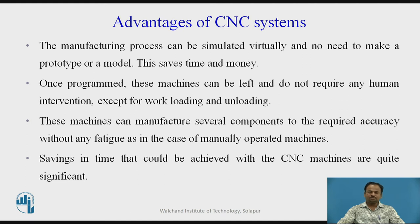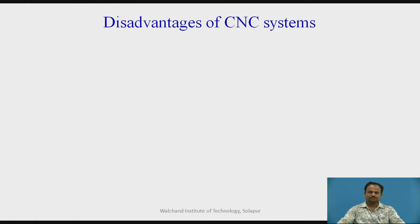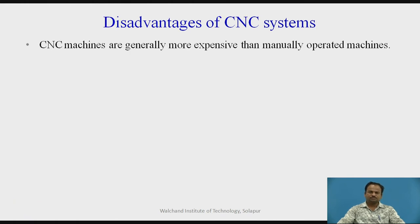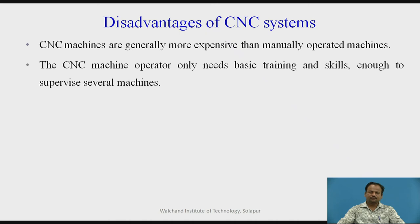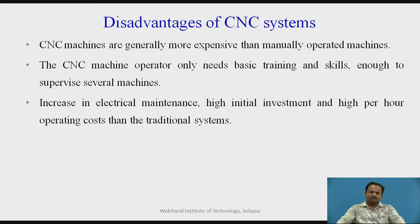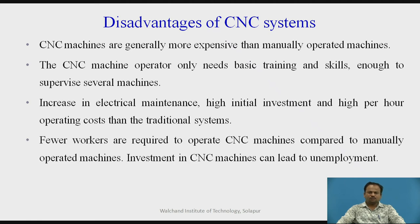Now, disadvantages of CNC systems. CNC machines are generally more expensive than manually operated machines. The CNC machine operator only needs basic training and skills, enough to supervise several machines. There is an increase in electrical maintenance, high initial investment, and high per-hour operating costs compared to traditional systems. Fewer workers are required to operate CNC machines, and investment in CNC machines can lead to unemployment.